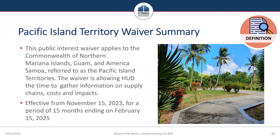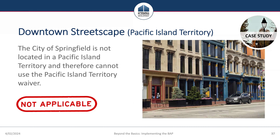The Pacific Island Territory Recipients Waiver addresses the unique complications Pacific Island Territories face in accessing construction materials, manufactured products, and iron and steel needed for infrastructure projects. HUD has waived the Buy America preference requirements until February 15, 2025. The City of Springfield is not a Pacific Island Territory, so this waiver does not apply to the downtown streetscape project either.